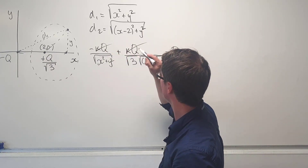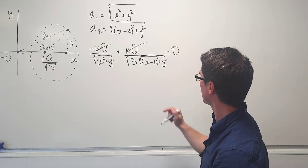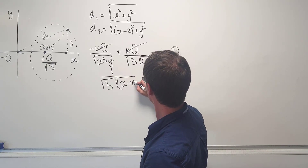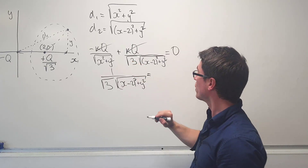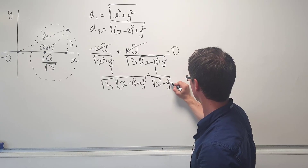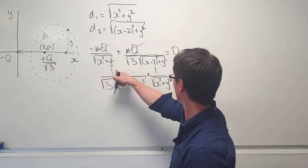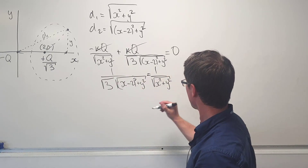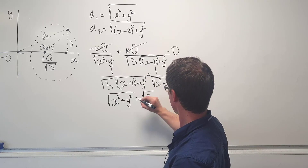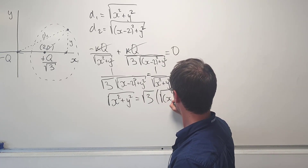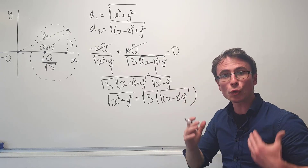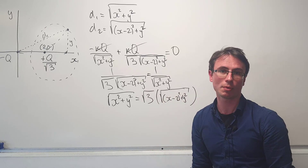Now we can cancel k and q out of the equation. Moving terms across, we get: one over root three times the square root of (x minus two) squared plus y squared equals one over the square root of x squared plus y squared. Cross-multiplying gives us the square root of x squared plus y squared equals root three times the square root of (x minus two) squared plus y squared. Squaring all terms makes those square roots disappear.